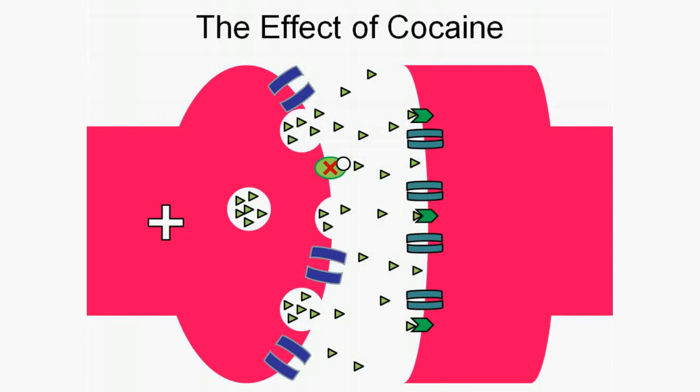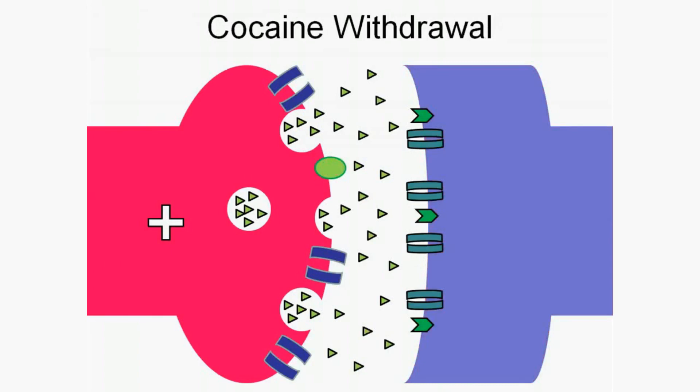When cocaine is no longer present in the system, reuptake pumps are restored to function and dopamine levels in the synapse return to normal.